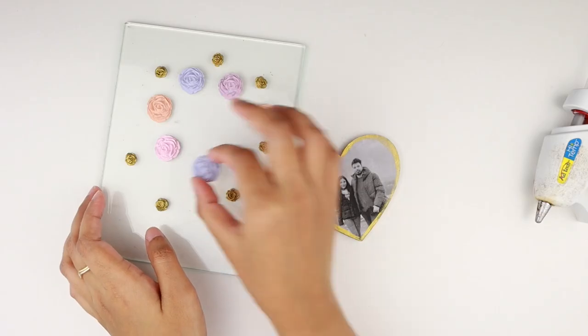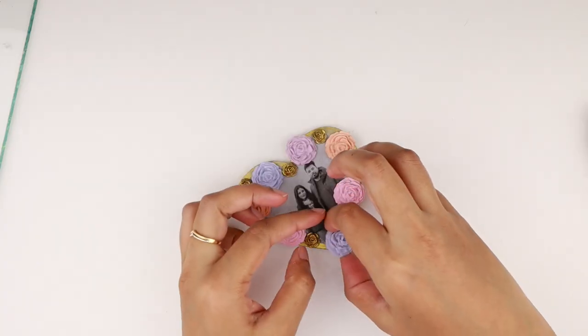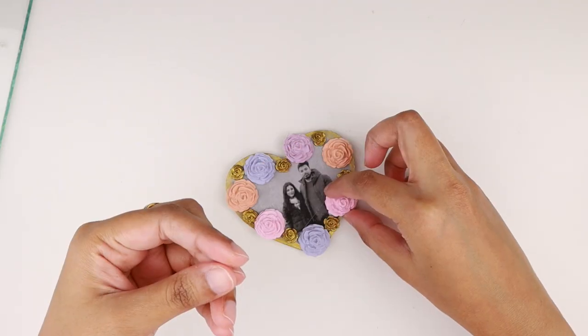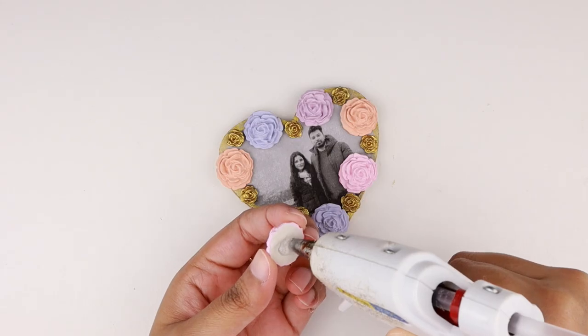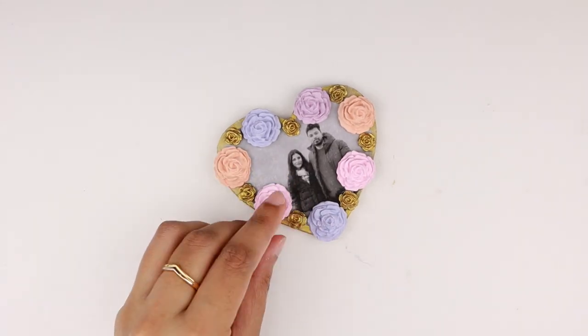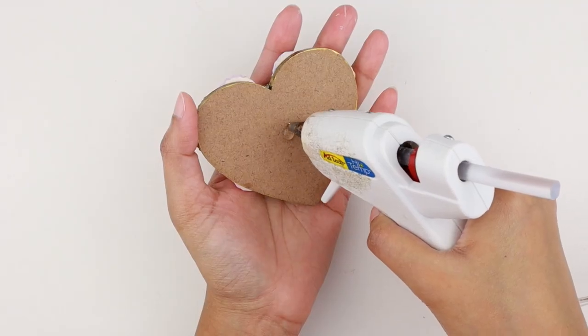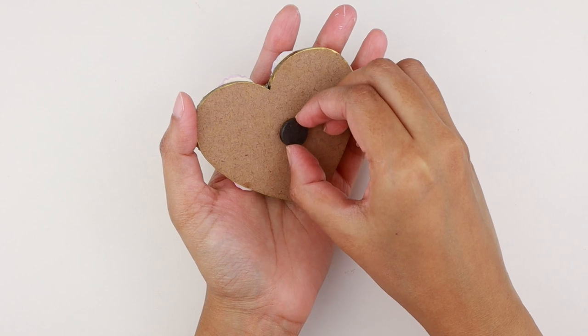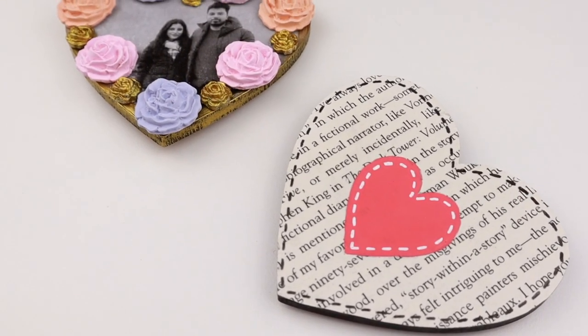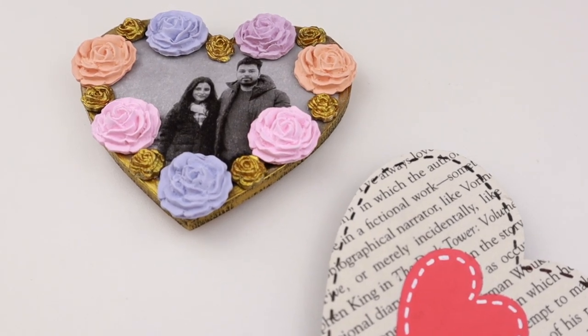I painted all the tiny roses with a gold acrylic paint. Then I placed the roses back on the heart like the way we arranged before, and I started to hot glue the pieces one by one. Finally, I took a button magnet and hot glued it to the back of the heart. You can also use E6000 or super glue for this. This completes our heart fridge magnets, which are a great gift option for Valentine's Day, and I love how cute they turned out.